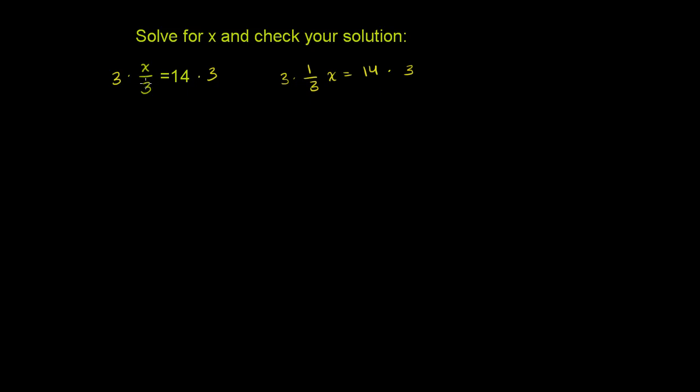So what are we going to get over here on the left-hand side? 3 times anything divided by 3 is going to be that anything. We're just going to have an x left over on the left-hand side. And on the right-hand side, what's 14 times 3? 3 times 10 is 30. 3 times 4 is 12. So it's going to be 42.